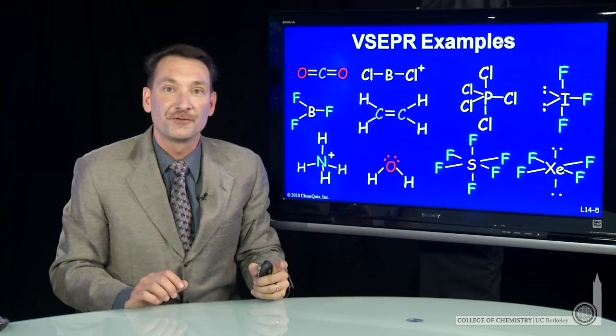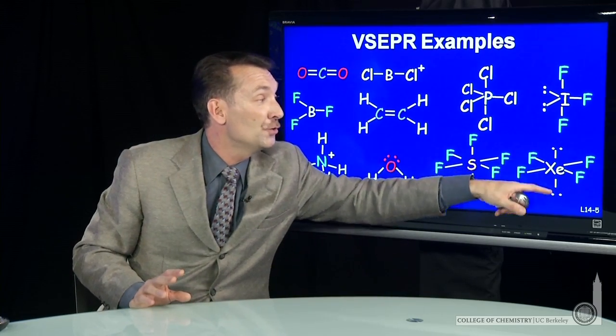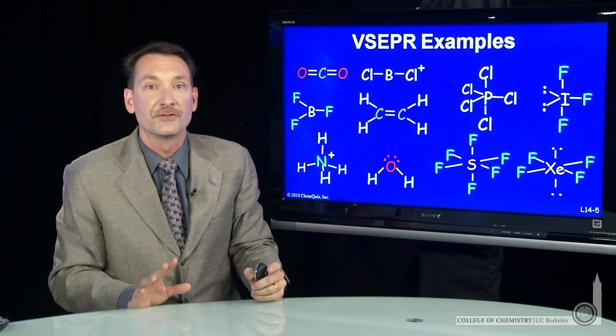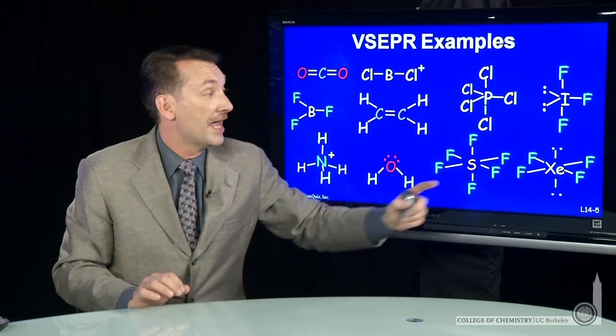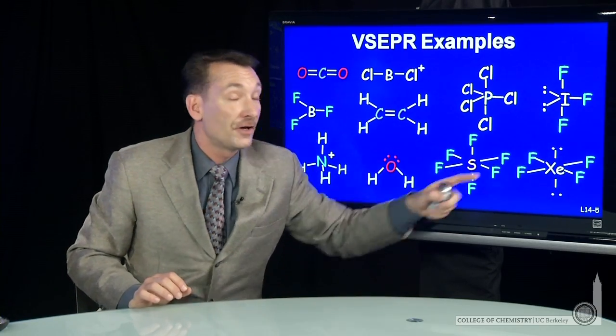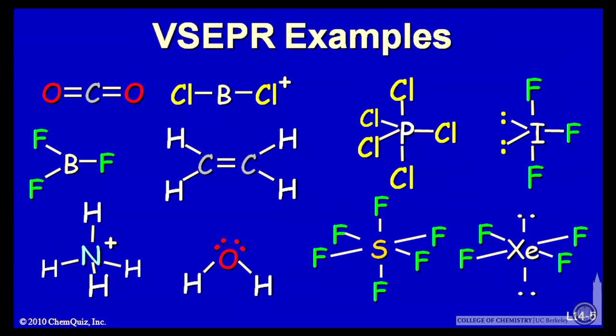Or xenon tetrafluoride, again, steric number six. But this case, two of the items are lone pairs. And in this case, they are arranged axially, and they give an overall shape to xenon tetrafluoride of square planar. So finally, we get to a truly square planar molecule after all these travels through our molecular shapes.